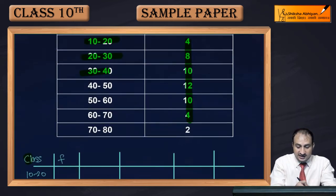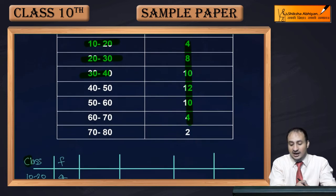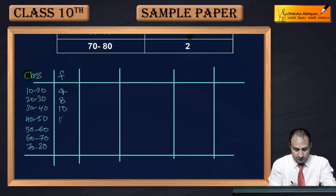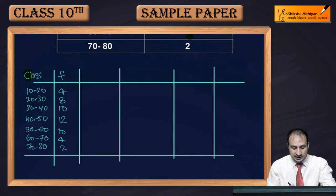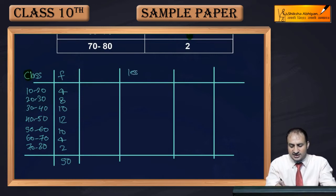And their frequencies given are 4, 8, 10, 12, 10, 4, 2. After adding these, how much is this coming? This is coming to 50. Now here I will make less than type. Less than cumulative frequency we will make.